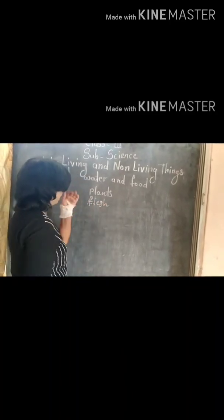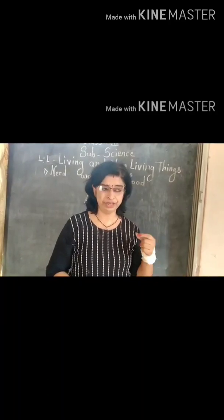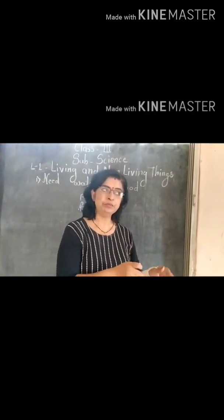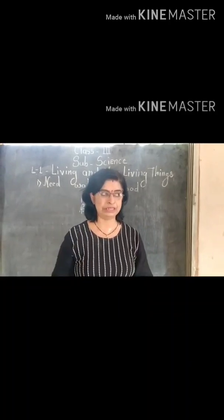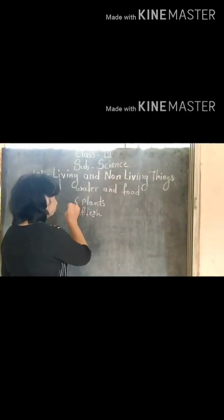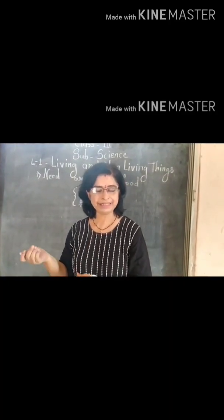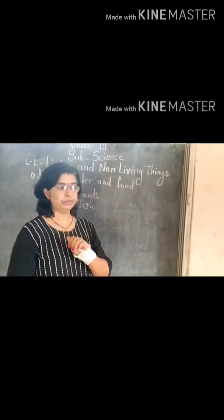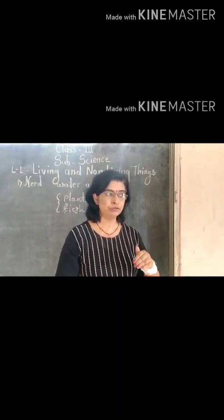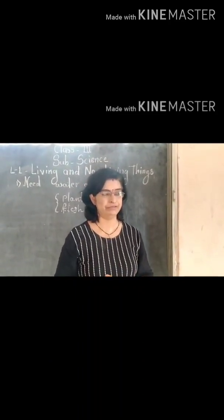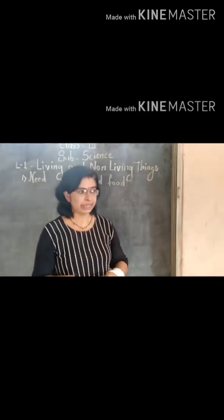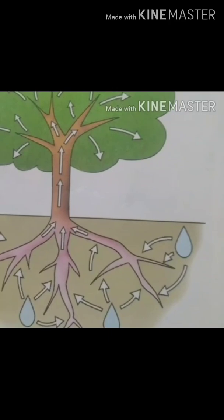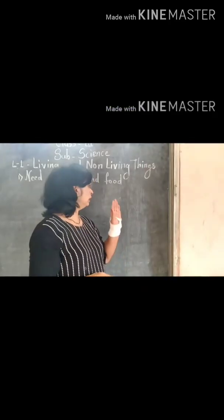Then some animals like fish, bear, sparrow, fox, and human beings eat both — plants as well as the flesh of other animals. So some animals eat both. Now, what about plants? From where do they get their food? Plants make their own food by themselves in the presence of sunlight and air. They absorb water from the soil and make their food.